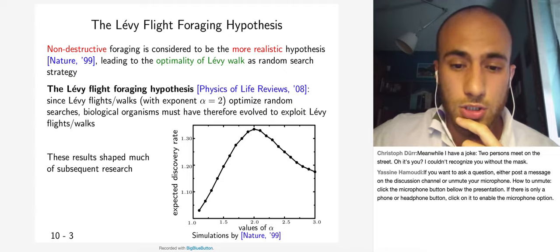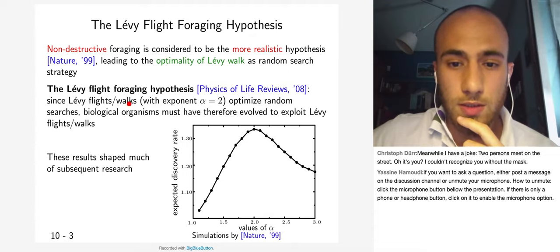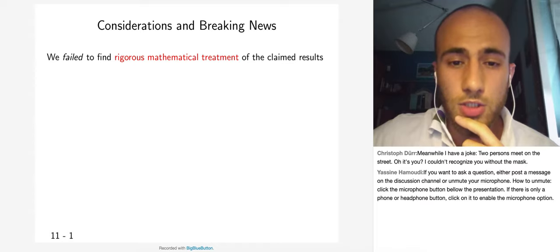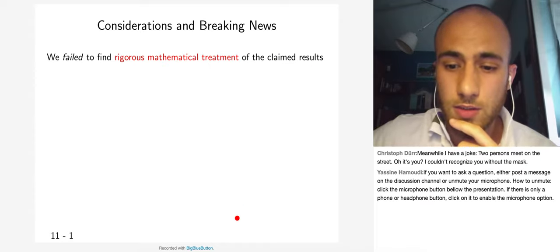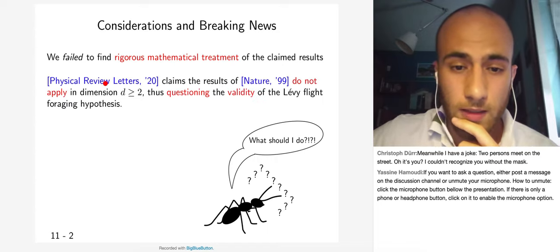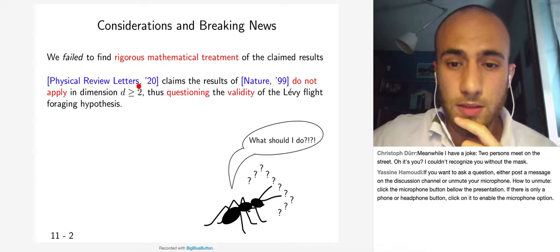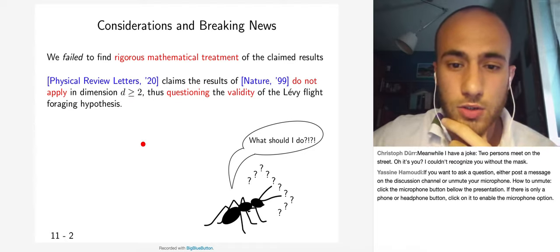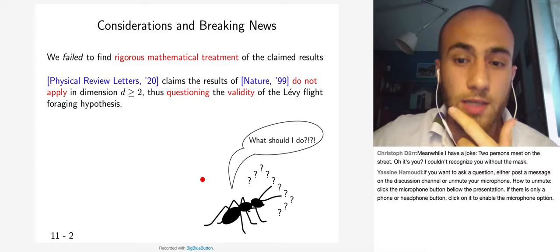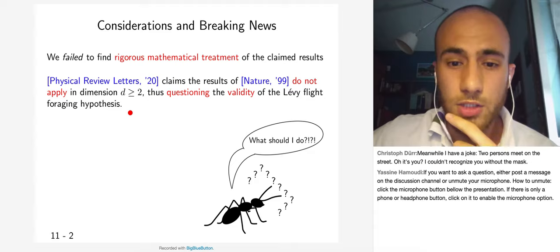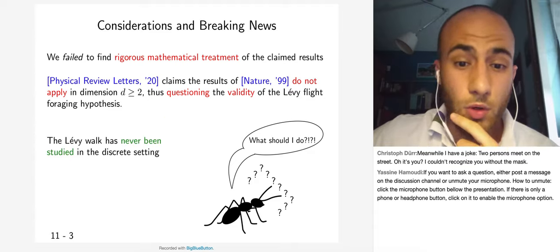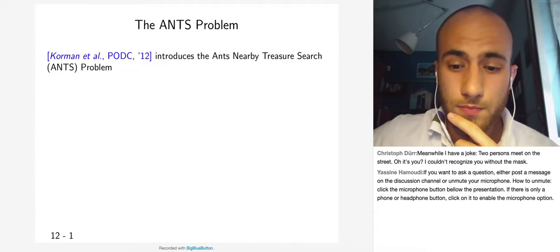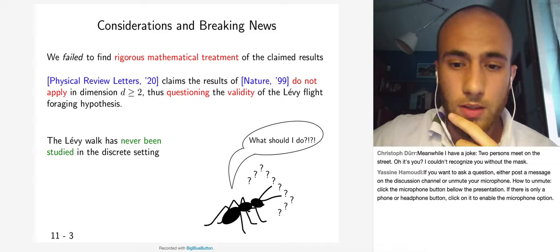Many researchers have taken inspiration from the Lévy flight foraging hypothesis, but we failed to find a rigorous mathematical treatment of the claimed results. Indeed, an article in Physical Review Letters claims the 1999 Nature results do not apply in dimension D at least 2 — including the two-dimensional plane, which is a realistic scenario — thus questioning the validity of the Lévy flight foraging hypothesis. Furthermore, the Lévy walk has never been studied in the discrete setting, and so we propose to do so.